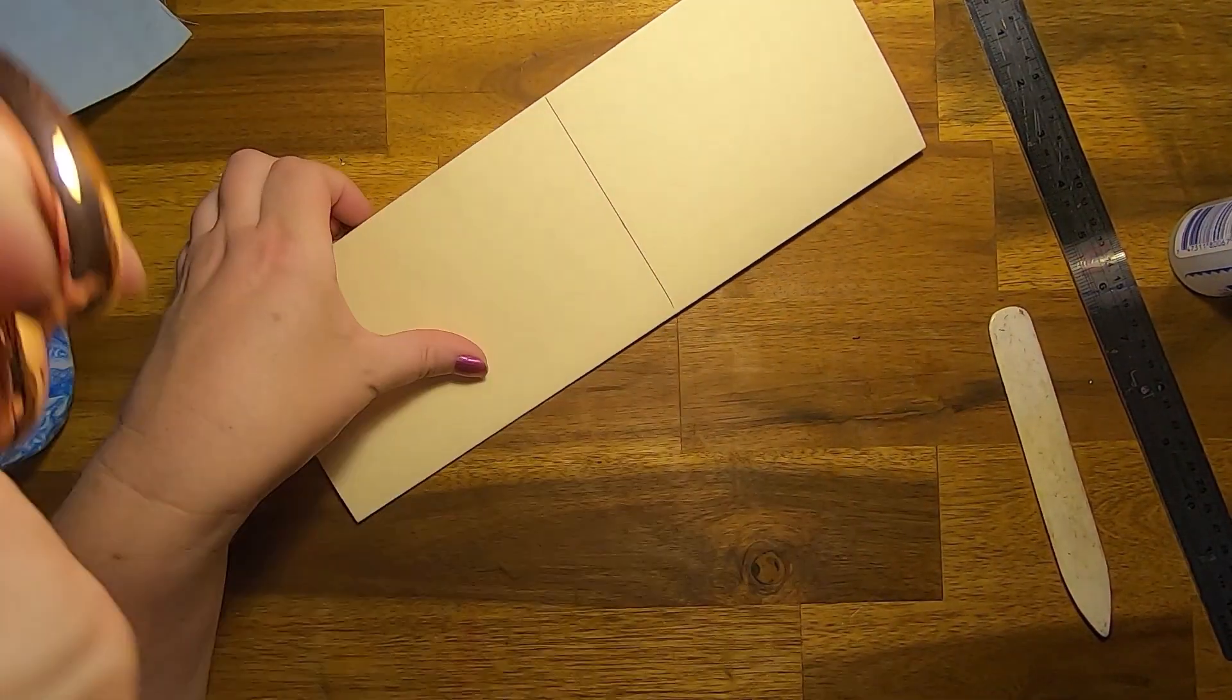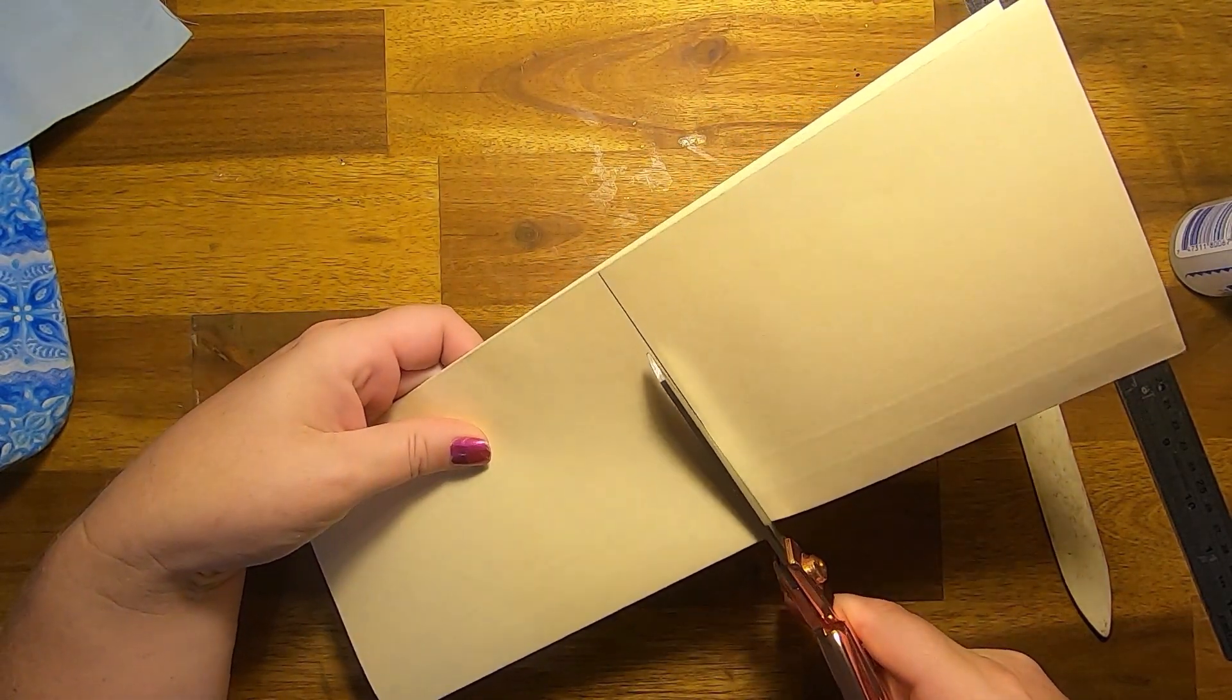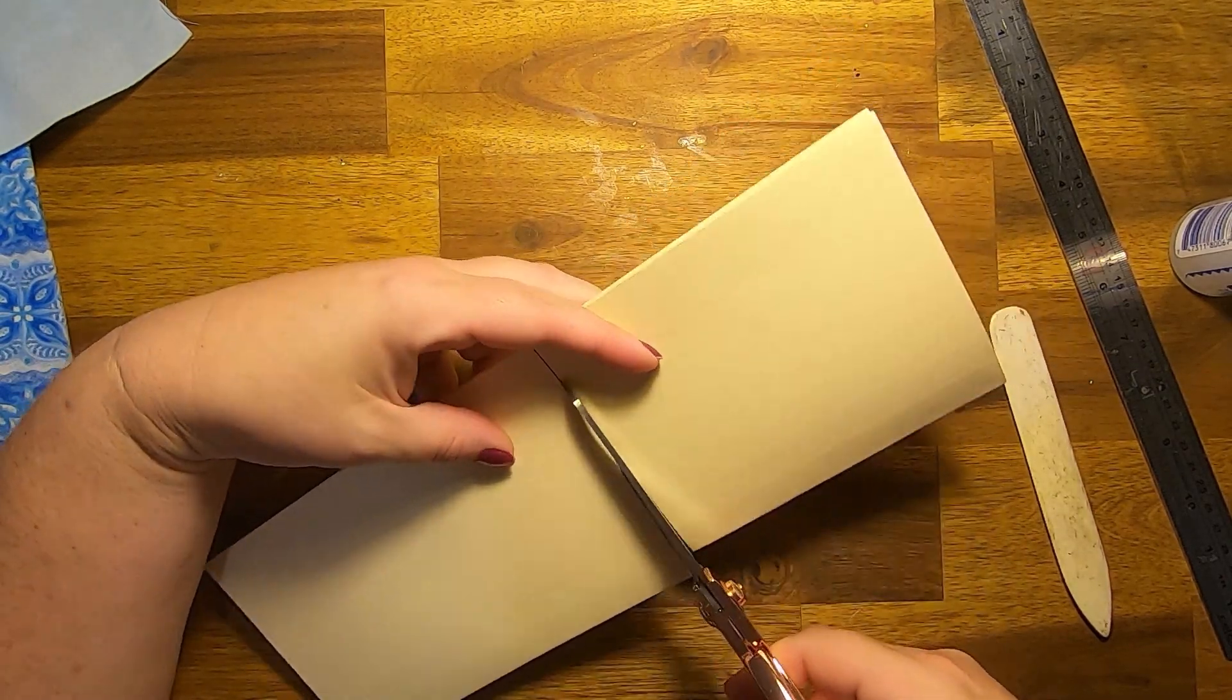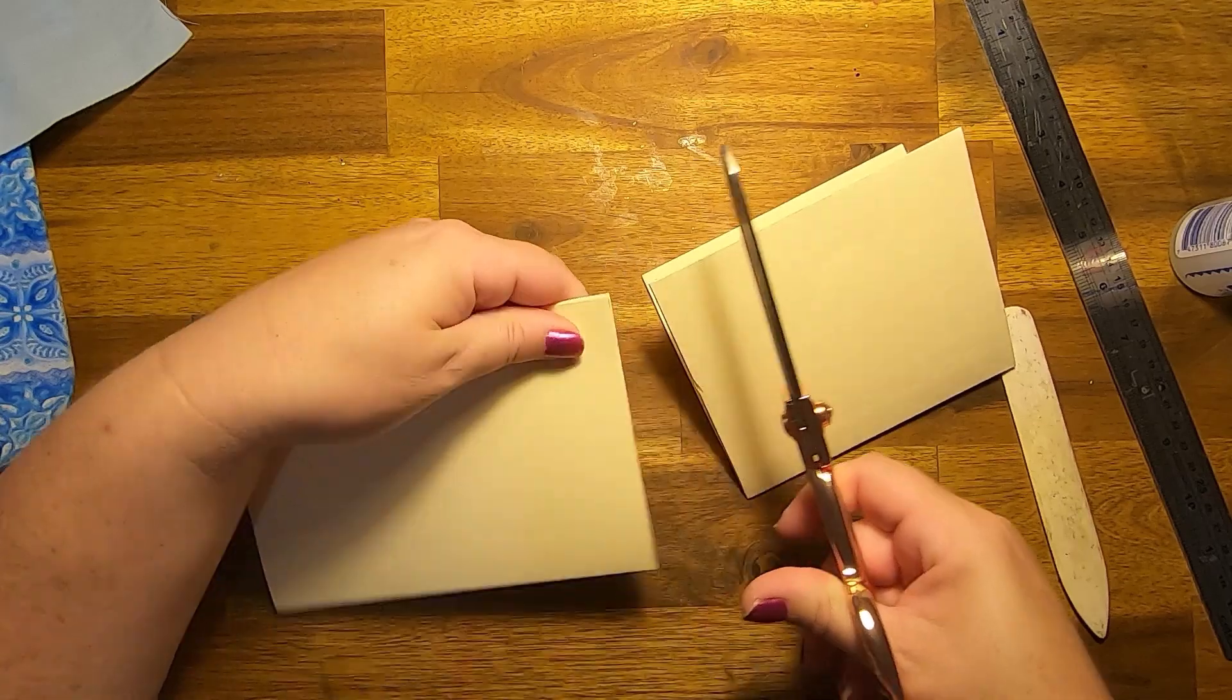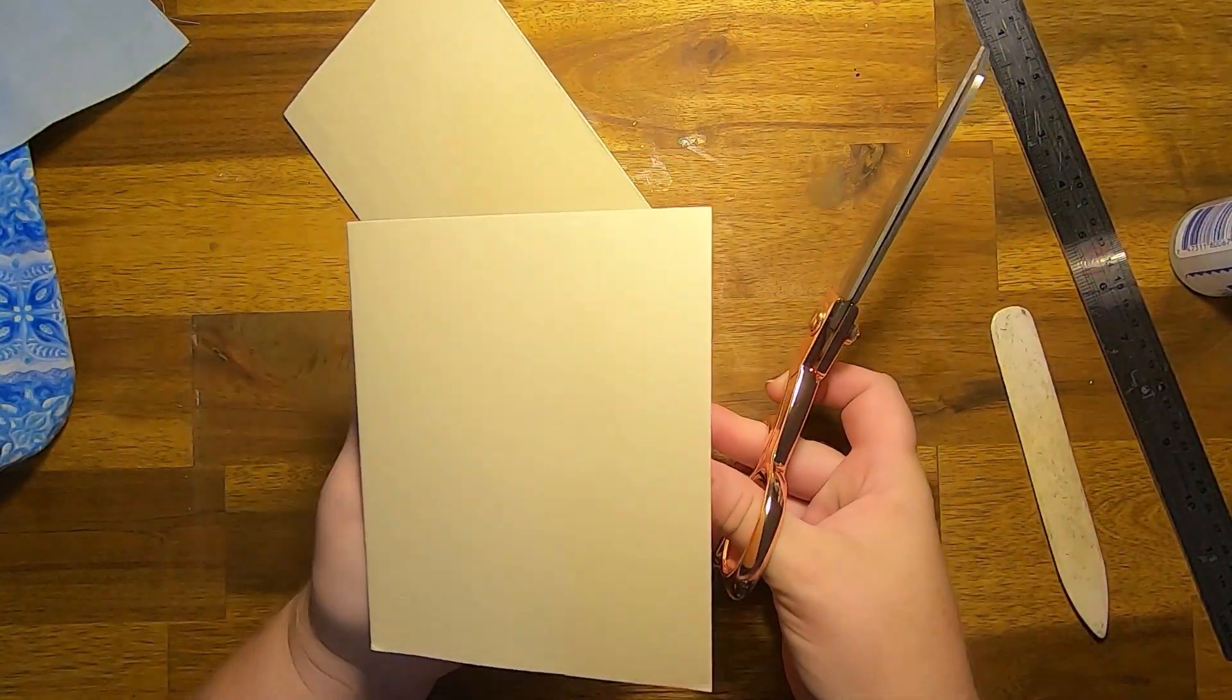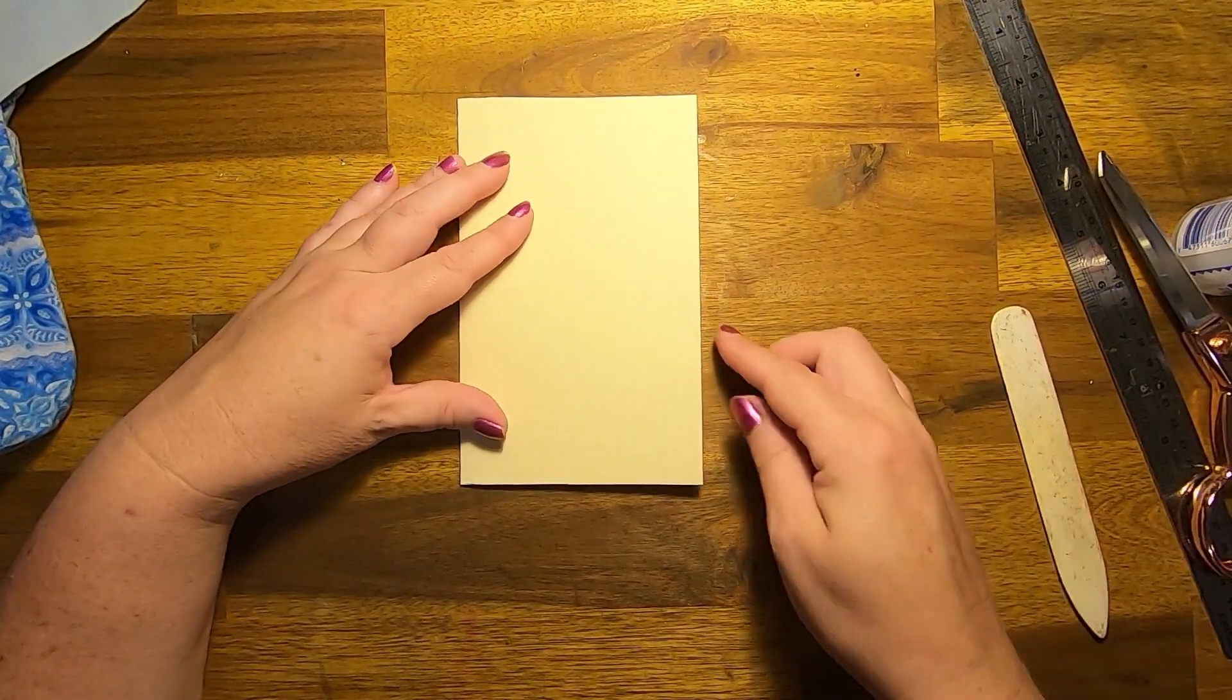And I'm just going to cut this one with scissors but you could use your trim, your paper trimmer or a knife and your ruler. And then you could use this one as a mini journal. I'm just going to show you with this bigger one.